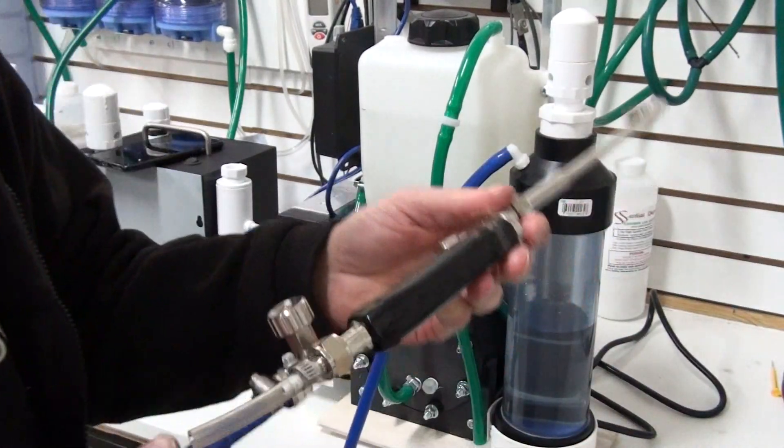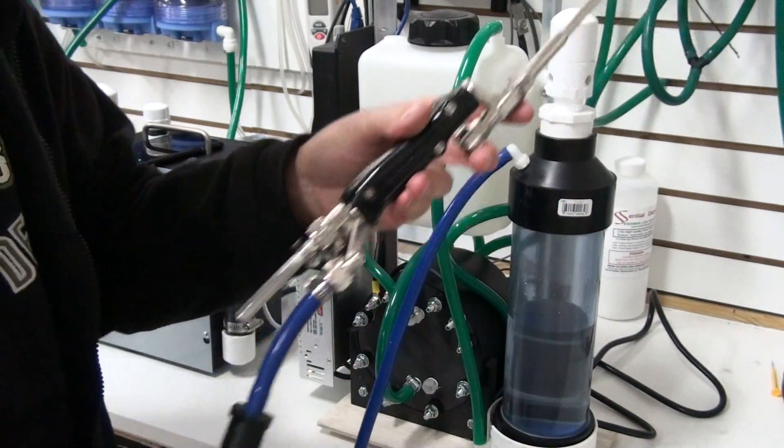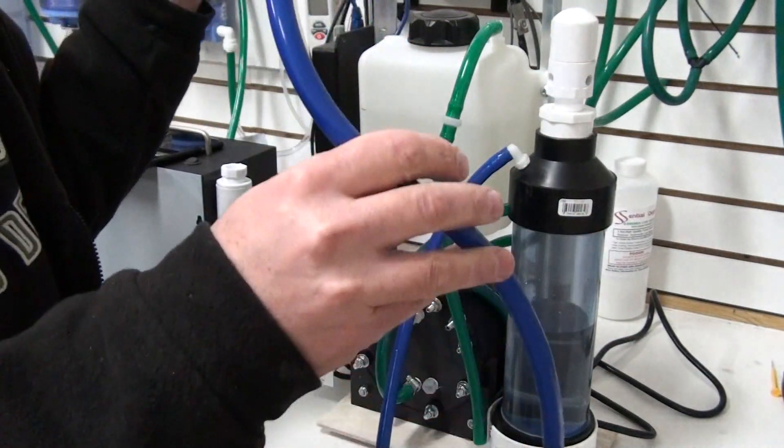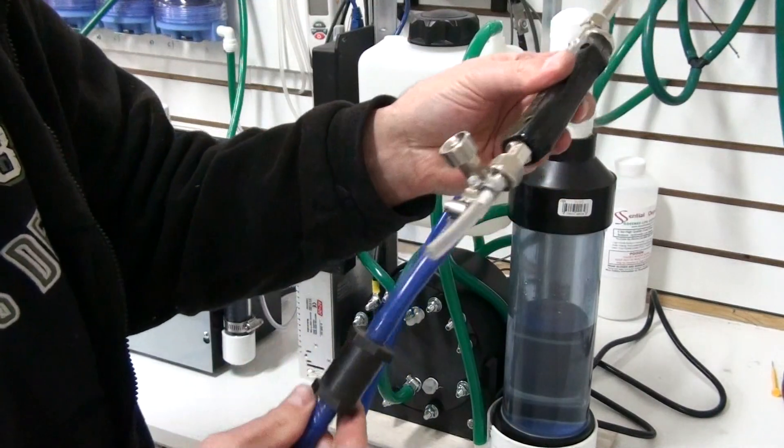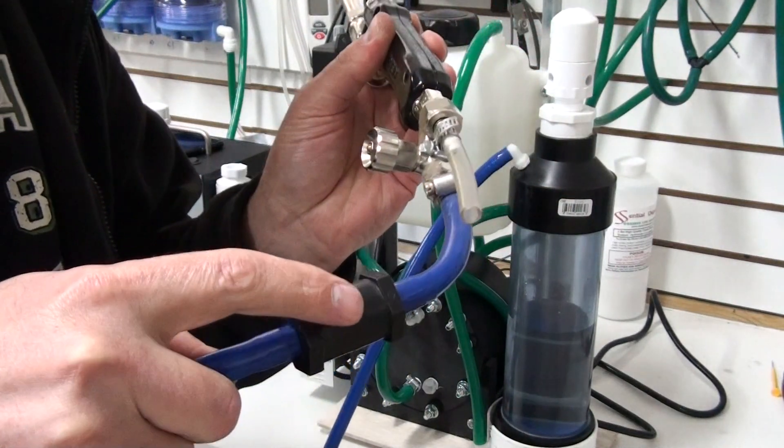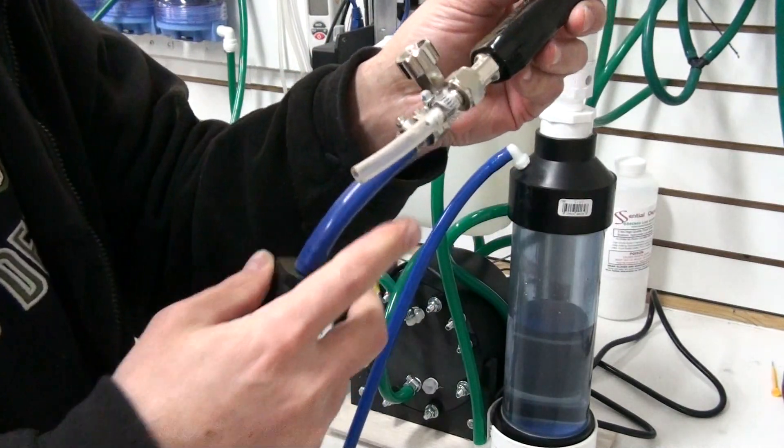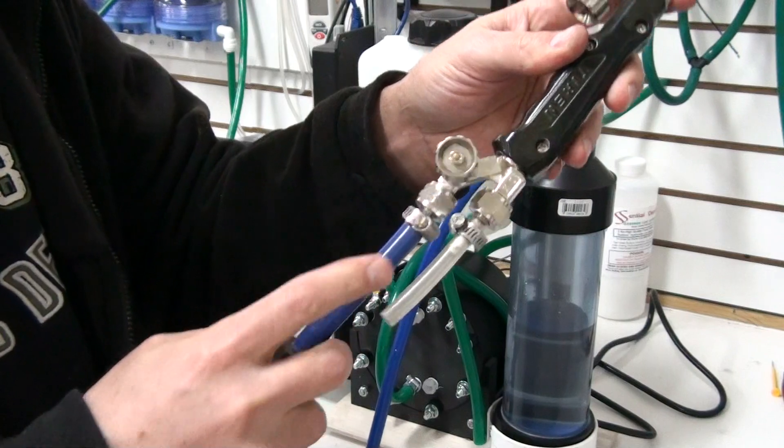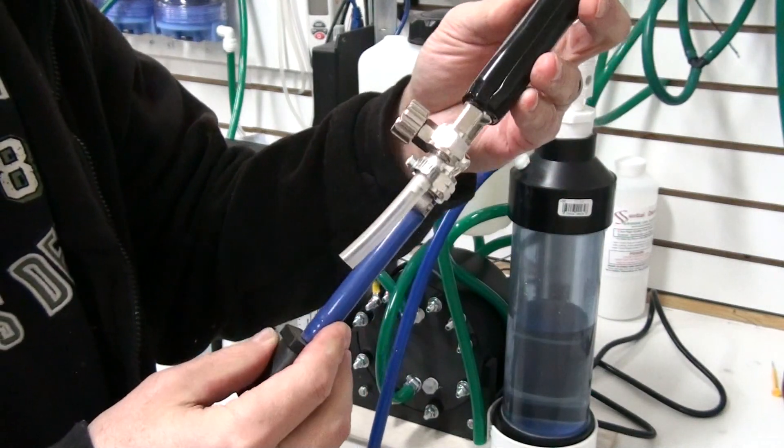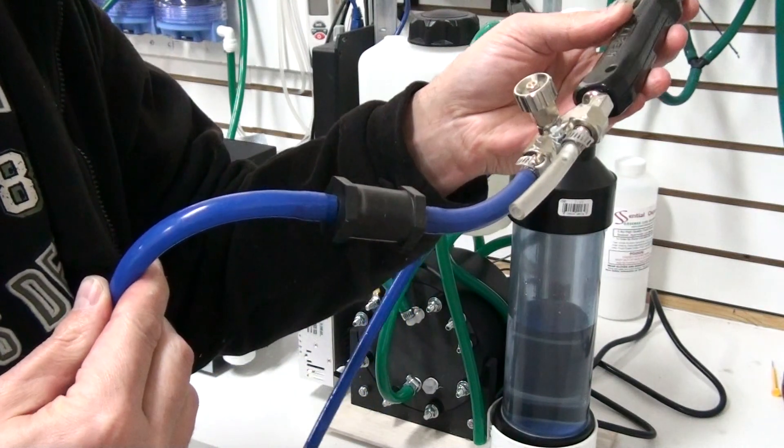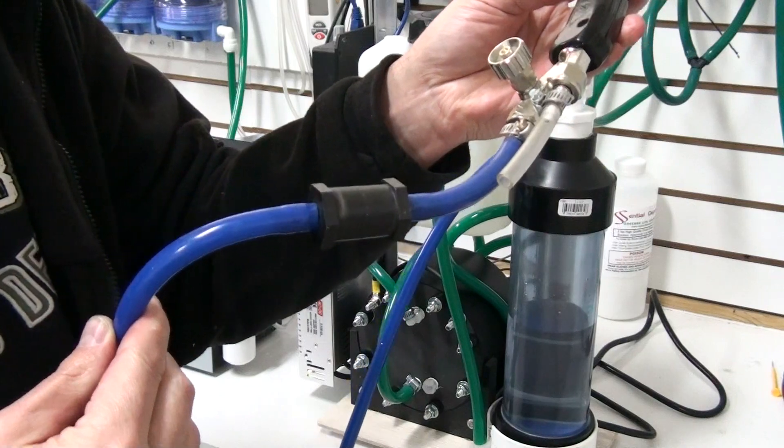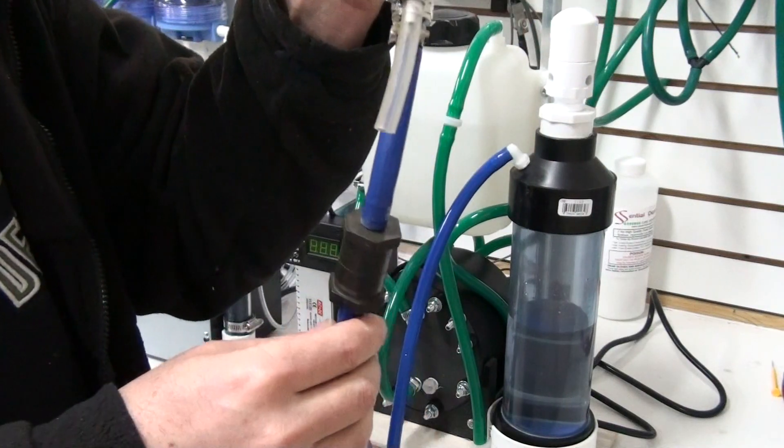And then on your torch side, obviously connect the other end of your hose to your torch. It's very important that you put an inline flash arrester in the line, preferably right after your torch where you hook up. So within the first six inches, you want to put your flash arrester. That will keep you safe.